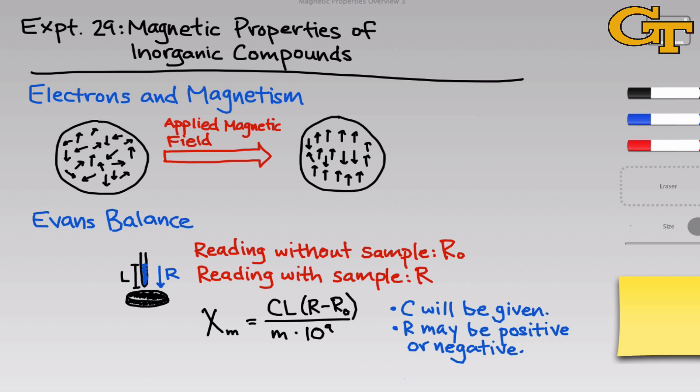I mentioned we would get back to this issue of diamagnetism. What about all the other paired electrons in coordination complexes? Don't they act like little diamagnets and repel the magnetic field? You'd be absolutely correct. To calculate the correct value of the magnetic susceptibility, we need to account for the diamagnetic effects of all the paired electrons in atoms.